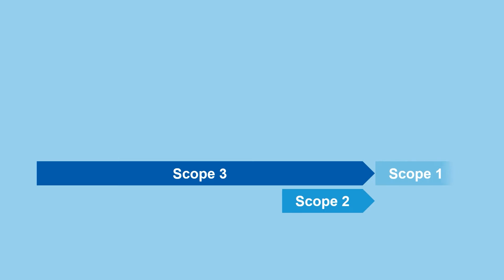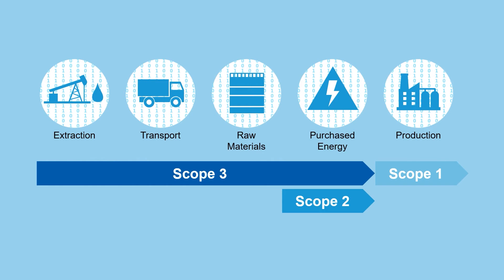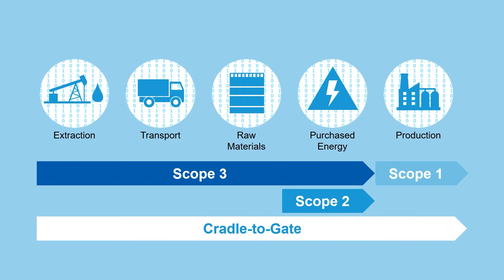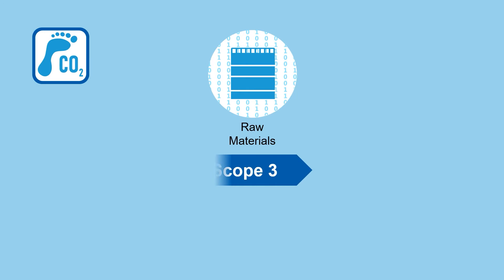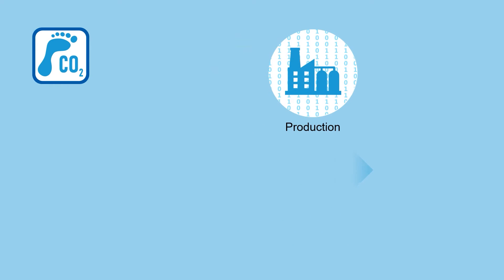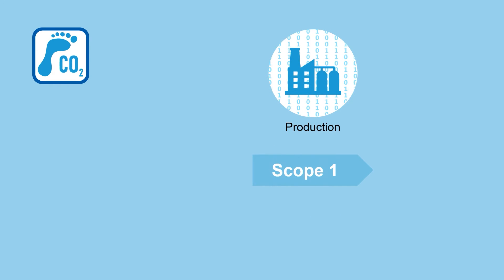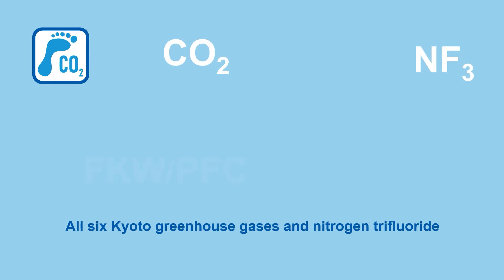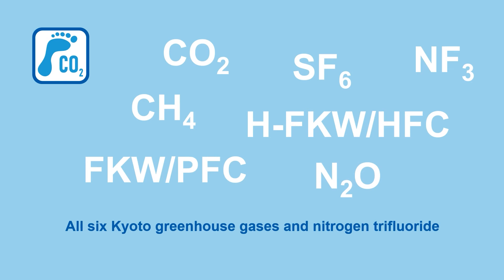In principle, the PCF calculation should take into account the following points: cover all product-related GHG emissions and removals from cradle to gate. For raw materials and utilities — scope 3 — consider supplier-specific PCF data wherever possible, or PCF data from LCA databases. Consider primary data for all processes under your ownership — scope 1 — and preferably market- or location-based emission factors for purchased energy — scope 2. Include all six Kyoto greenhouse gases and nitrogen trifluoride.